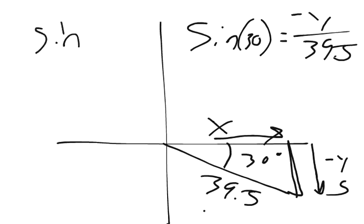If you type in sine of 330, it gives you negative 0.5.